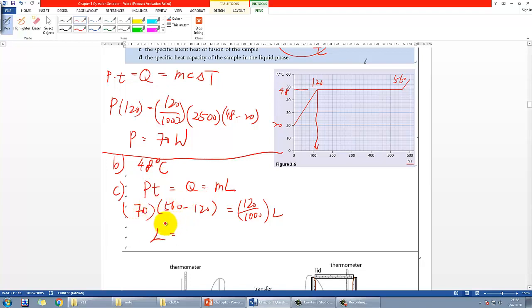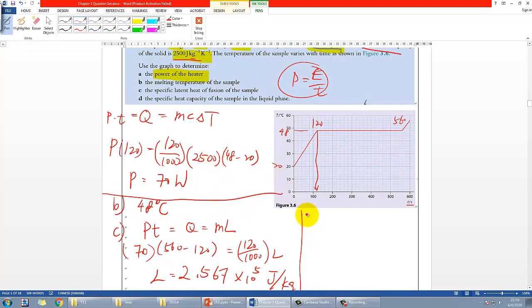So l would then be solved - that's huge - 2.567 times 10 to the power of five. And be careful of the unit - the unit should be joule per kg in that case, because we use the SI unit.